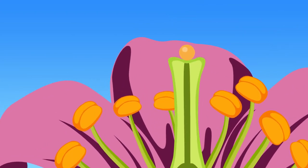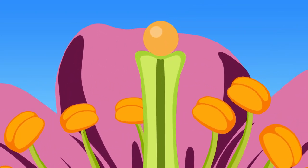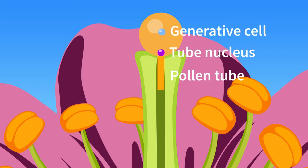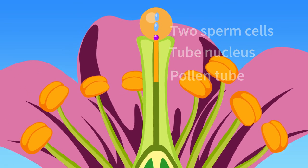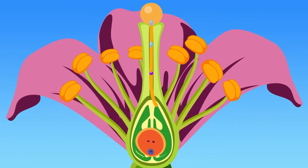Now, the pollen grain on the stigma absorbs water and begins to swell. It germinates and gives rise to a pollen tube that enters the style. This tube contains the generative cell and the tube nucleus. The generative cell divides to form two sperm cells. The pollen tube elongates to carry the sperm cells to the ovule found inside the ovary.